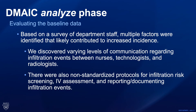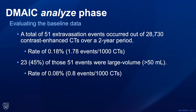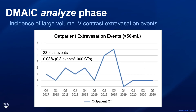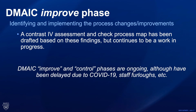Moving into the analyze phase, based on a survey of our department staff, multiple factors were identified that were likely causing the increased incidence. We discovered varying levels of communication regarding these events between our nurses, technologists, and radiologists. We also felt that there were non-standard protocols for infiltration risk screening, IV assessment, and reporting and documenting these infiltration events. We found a total of 51 events; 23 of those were large volume, greater than 50 milliliters. Our event rate is shown here, extending into Q3 of 2020, with 23 total events found — 0.8 events per 1,000 CTs.